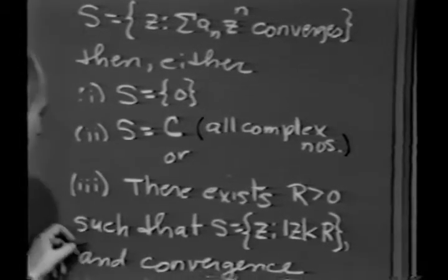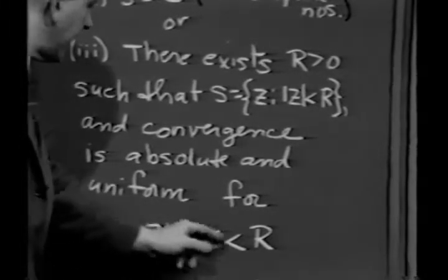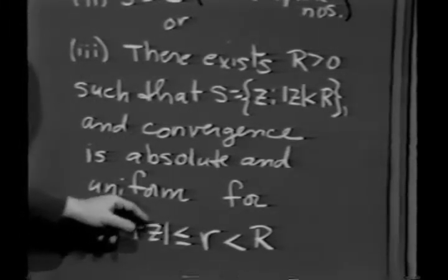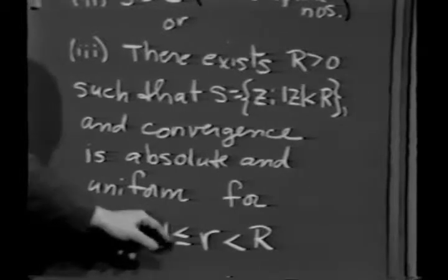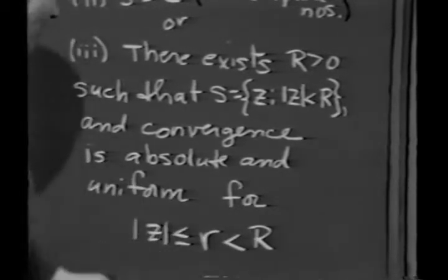At any rate, going on, the convergence is both absolute and uniform in any interior disk. In other words, inside the disk absolute value of z is less than or equal to little r, where little r is less than capital R.